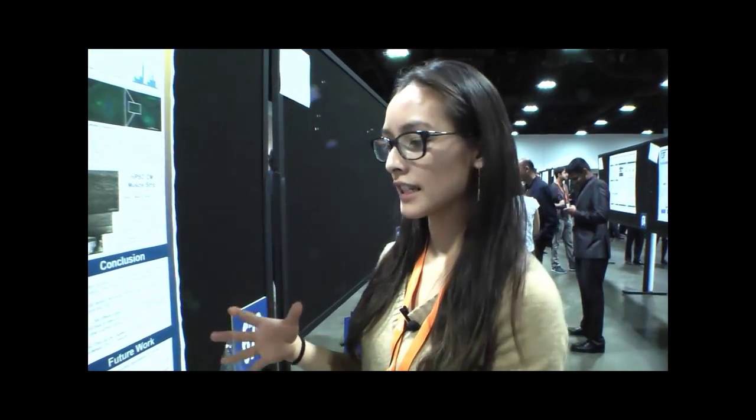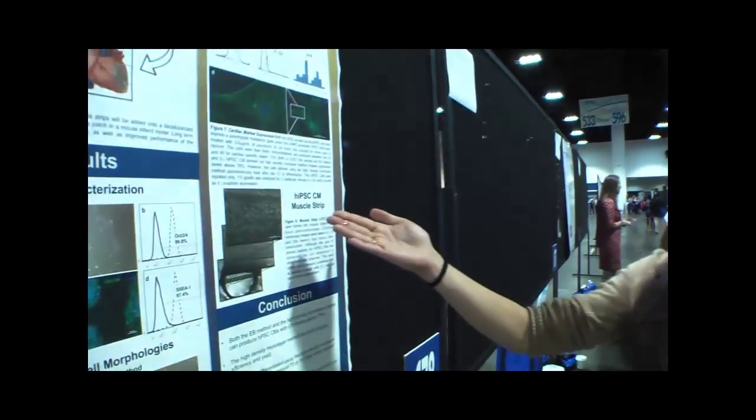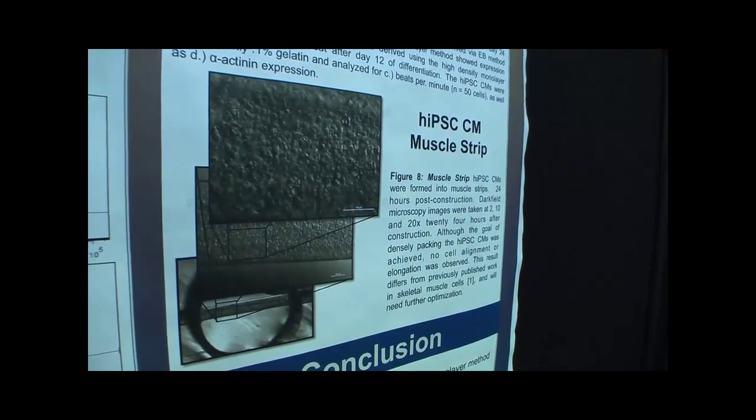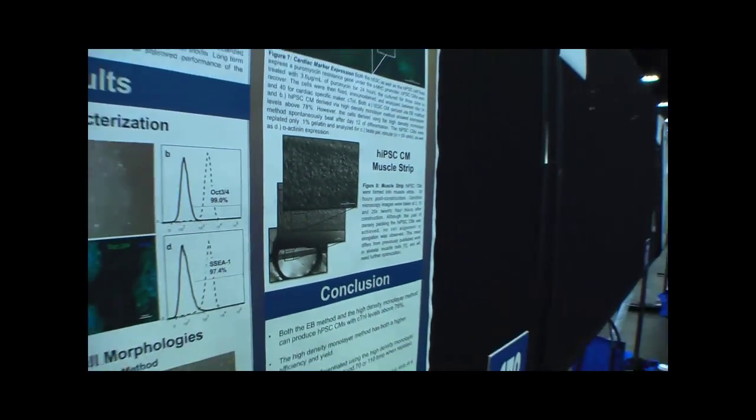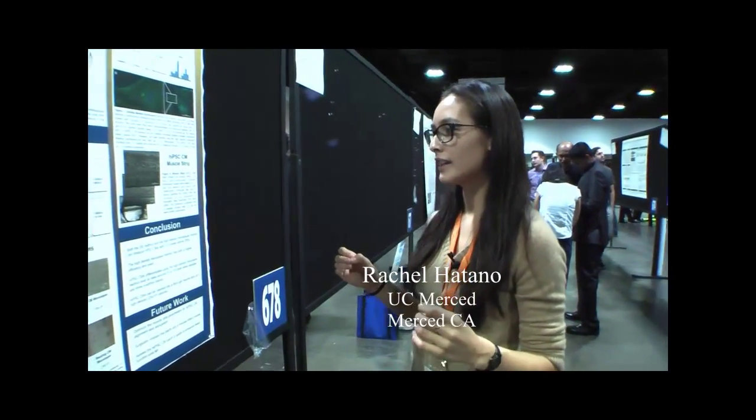I've seeded these cells into the muscle strip and you can see there's a very high density of cardiomyocytes in the strip. Next, we'll be characterizing these strips more and adding mechanical strain to get the cardiomyocytes to be more elongated and aligned. We'll then put it into our mouse infarct model.